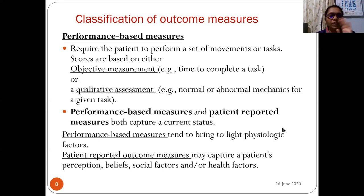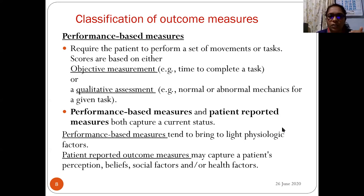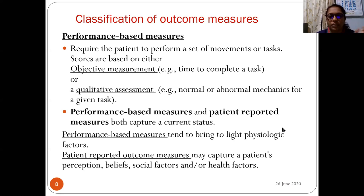The second type is performance-based measures. This requires the patient to perform a set of movements or a task. The score is based on objective measurement — such as time taken to complete the task — or qualitative assessment, such as normal or abnormal mechanics observed. Performance-based measures tend to highlight physiological factors, while patient-reported outcome measures capture a patient's perception, beliefs, social factors, and health factors.